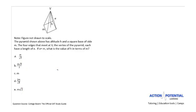Now let's look at the question. The pyramid shown has an altitude h and a square base of side m. The four edges that meet at v, which is the vertex, each have a length of e. It turns out that e is the same thing as m, so I'm going to scratch out e and write m instead so I'm not confused. Each side now has a length of m.